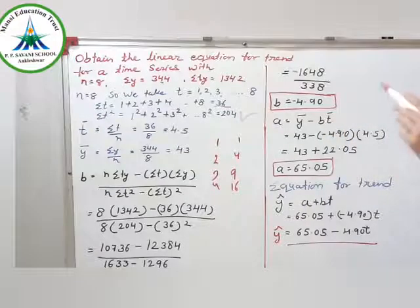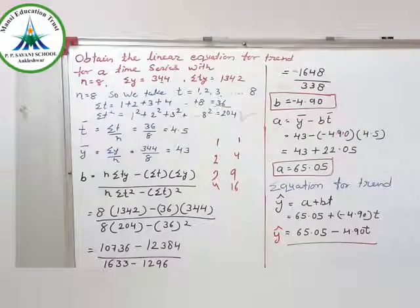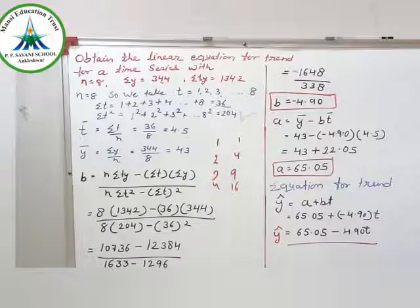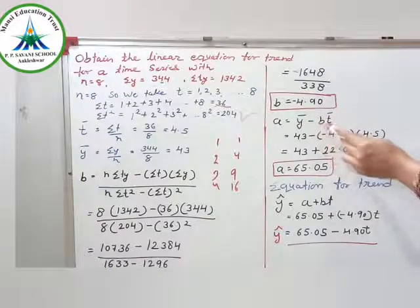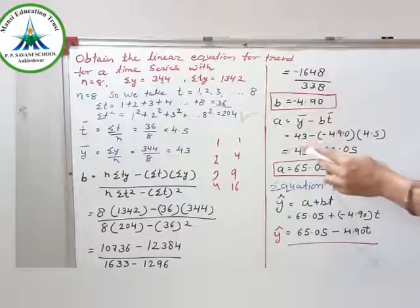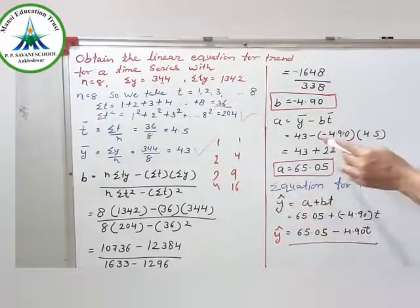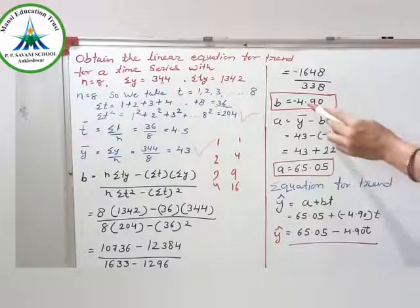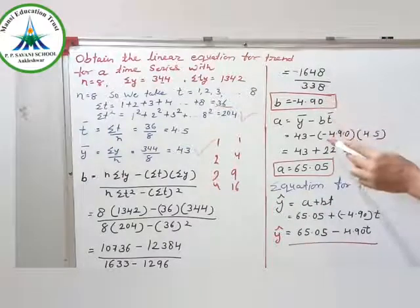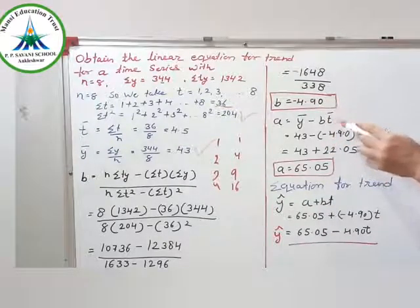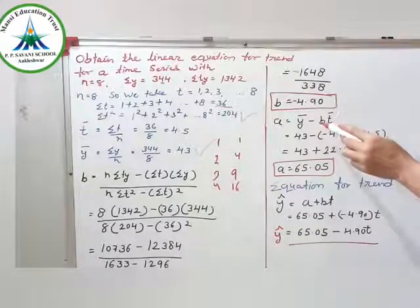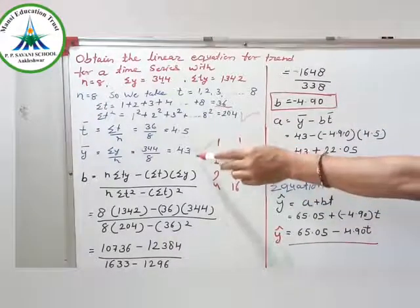Now we have to find out the equation. For the equation, we need to find a and b. So a equal to y bar minus b times t bar. Y bar equals 43, which we found out, minus b equals minus 4.90, then t bar, which we found out is 4.5.